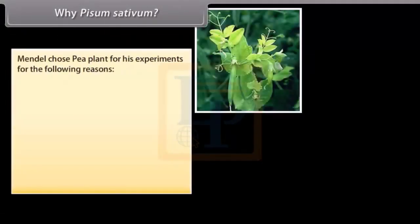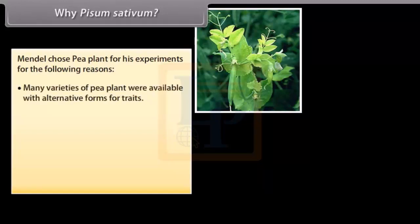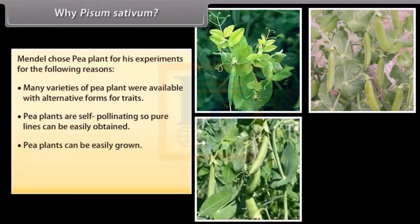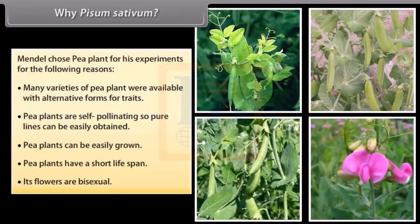Why Pisum sativum? Mendel chose pea plant for his experiment for the following reasons: many varieties of pea plant were available with alternative forms for traits, the plants are self-pollinating so pure lines can be easily obtained, the plants can be easily grown, the plants have a short life span, and its flowers are bisexual.